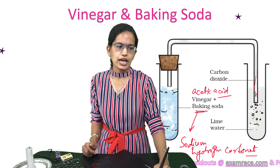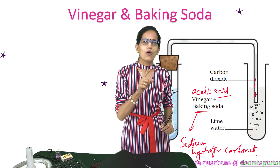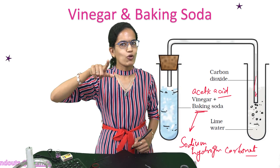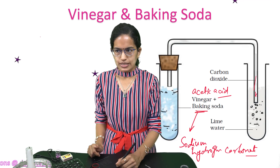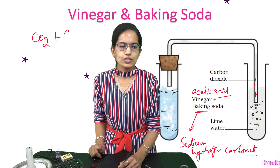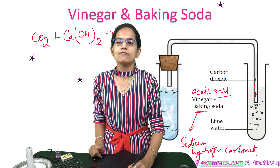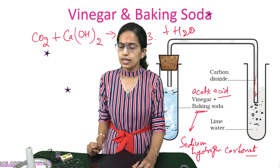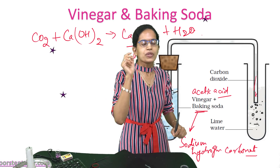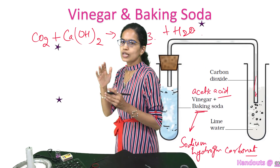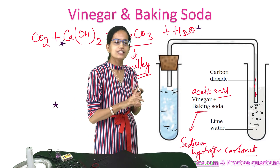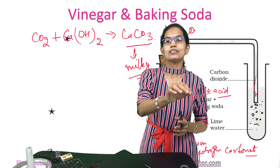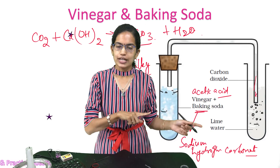The carbon dioxide obtained is passed into lime water. As soon as lime water receives this carbon dioxide, it turns milky due to a simple reaction: CO₂ combines with lime water Ca(OH)₂ to give CaCO₃ — calcium carbonate — and water. Calcium carbonate is responsible for turning the solution milky. This is a standard test for the presence of carbon dioxide, and also an example of a chemical change.